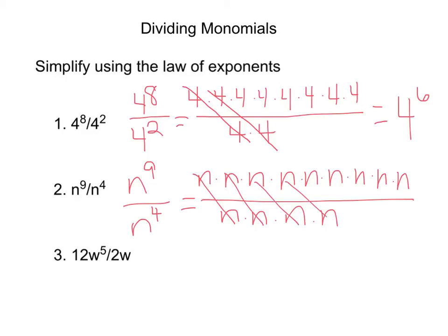Four of them cancel out, and we're left with five n's, so n to the fifth power.